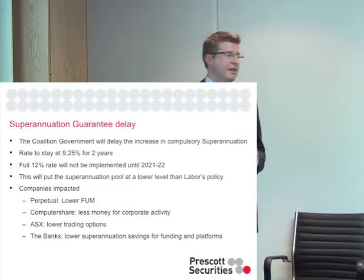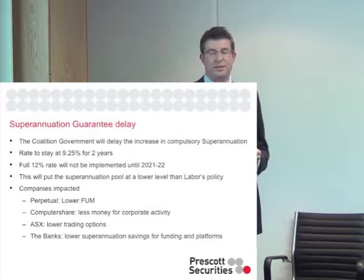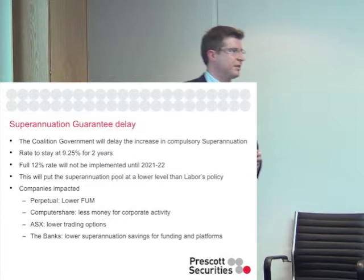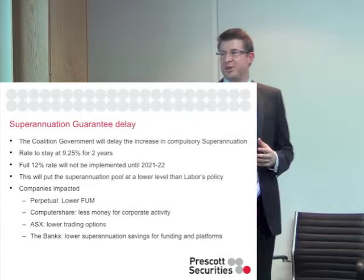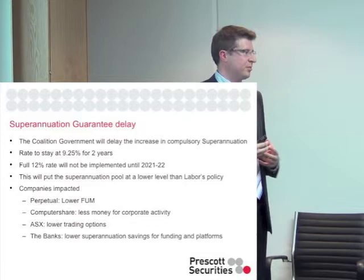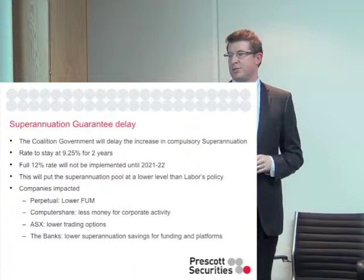The coalition government is going to delay superannuation guarantee rises, keeping the current rate at 9.25% for two years. That means the full 12% rate won't be implemented until 2021–22. This puts companies reliant on superannuation inflows — including ourselves — in a less favourable spot. Perpetual will have lower funds under management. Computershare will see less money in big super funds for corporate activity in Australia, lower trading volumes for the ASX, and lower superannuation savings generally for the banks.